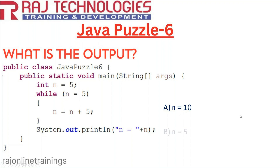Now let us look at another option: n equals 5. In the case of Java, the while condition expects a boolean expression. Here, 5 equals 5 is a numeric expression, so the condition is considered false since Java expects boolean. Therefore it won't enter the loop and some people will think n is 5 only.